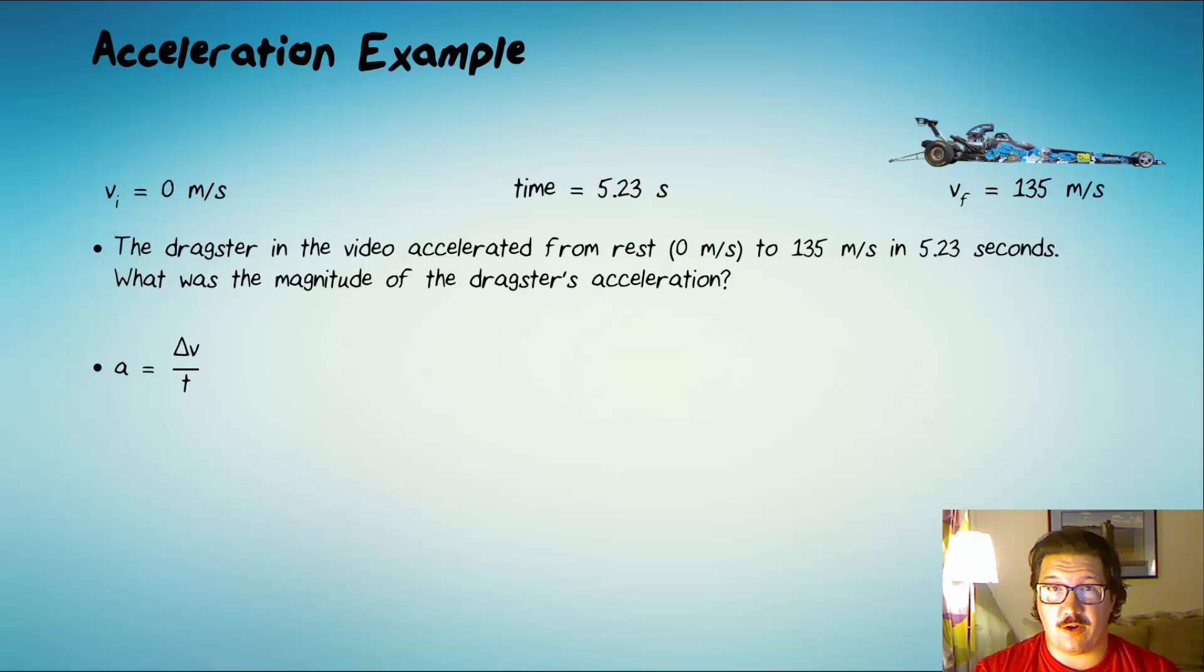So we'll start with our equation as always, a equals delta v over t. And I like to write out sometimes specifically what delta v means, right? It's vf minus vi. And we can substitute in what we know. 135 meters per second minus 0 meters per second, the final minus the initial, divided by 5.23 seconds. You should follow along in your calculator and double check this. I get the acceleration to be 25.8 meters per second per second.